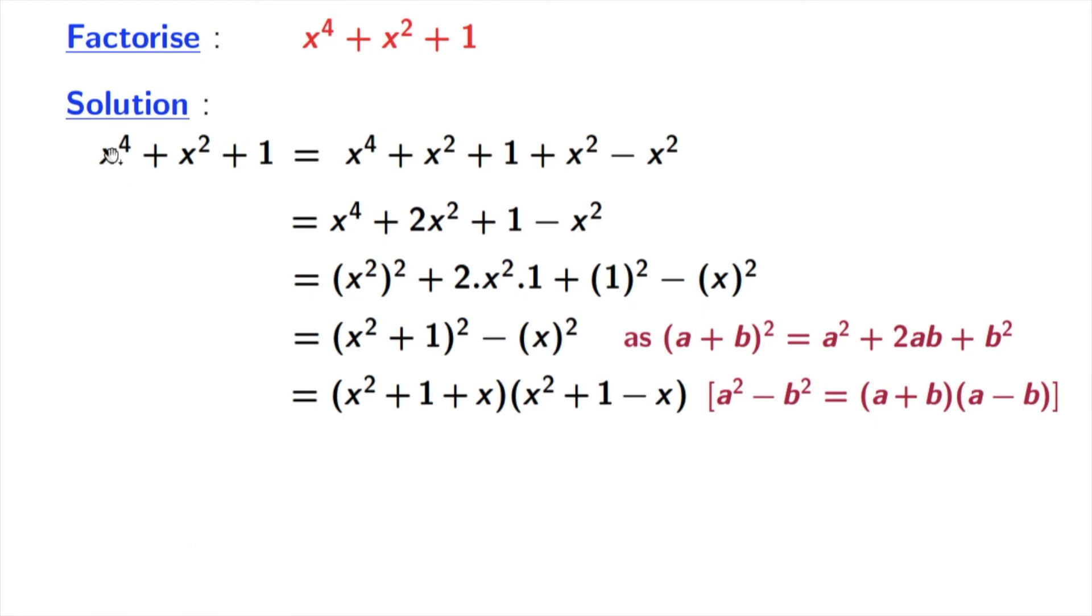Where a is x^2 + 1 and b is x. So we get x^4 + x^2 + 1 equal to (x^2 + 1 + x) times (x^2 + 1 - x), which is (x^2 + x + 1)(x^2 - x + 1). And this is our desired solution.